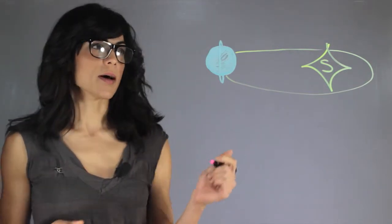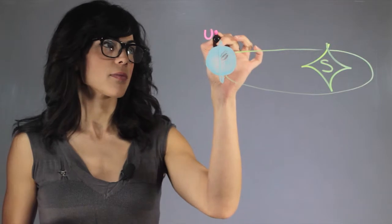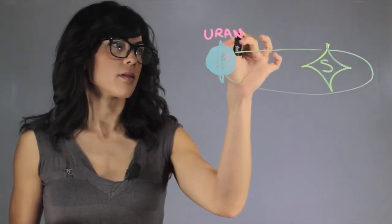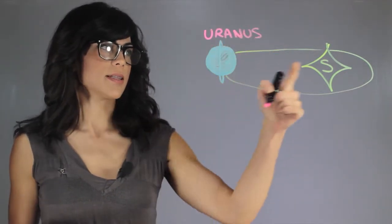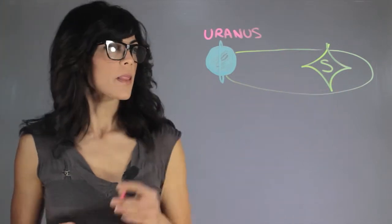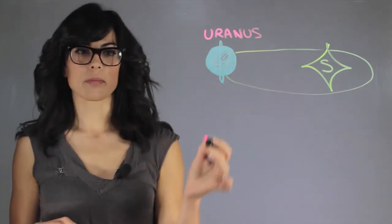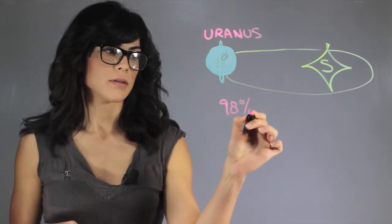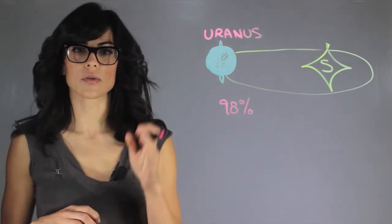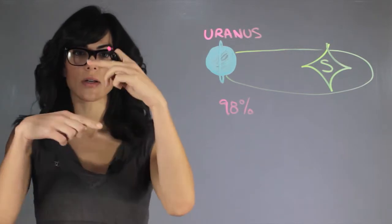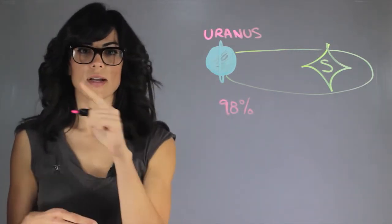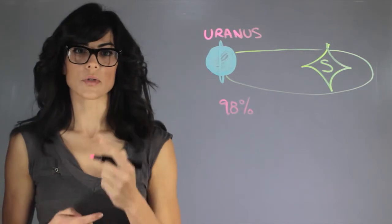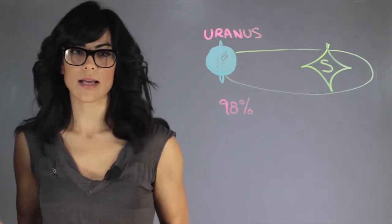So the planet that you're thinking about is Uranus. Let's say that this is the orbital plane and the actual equator of the planet is tilted by 98 degrees, which is quite a lot. So it's practically just rolling on its side rather than actually spinning like a top, which we generally visualize planets as.